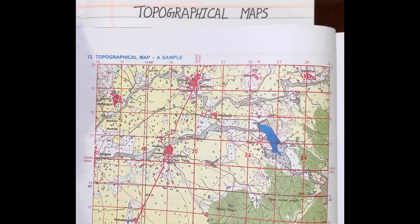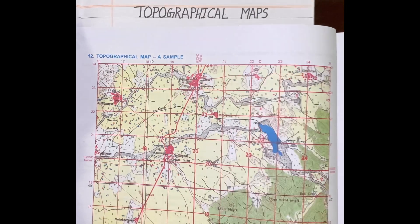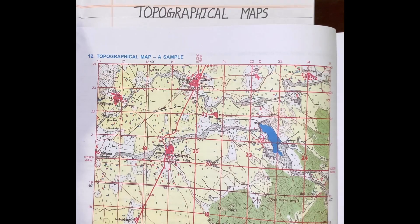Now the question comes, what is the importance of topographical maps? It is very important for city and town planners. Nowadays you can see that smart cities are coming up everywhere. So they need topographical maps to find out the exact location for buildings, factories, and to find out transport routes, etc.